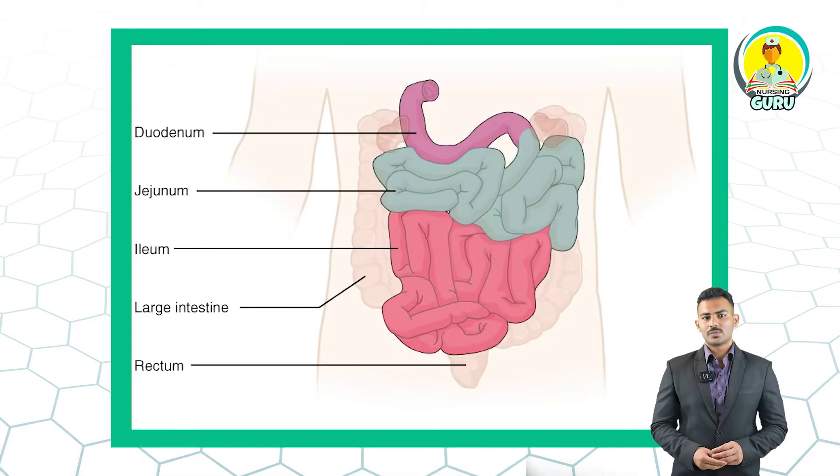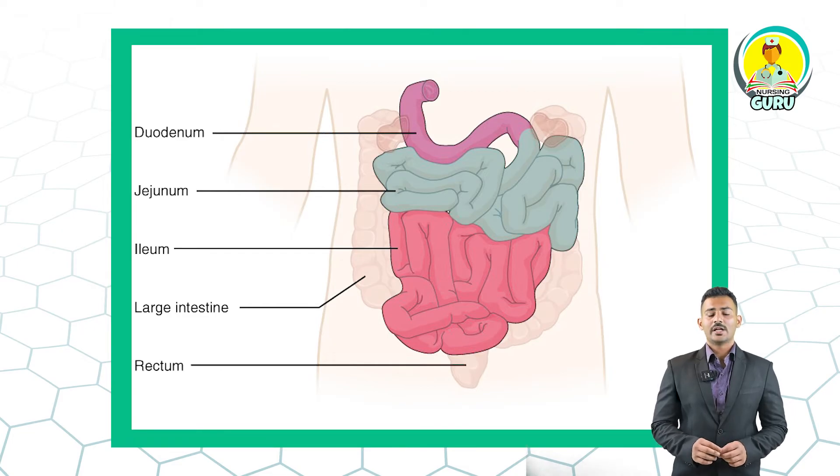The small intestine is distinguishable into three regions: the C-shaped duodenum, the long-coiled jejunum, and the highly-coiled ileum. The small intestine is responsible for complete digestion of macromolecules and absorption of their component molecules. The nutrients are absorbed by the inner wall of the small intestine into the bloodstream.